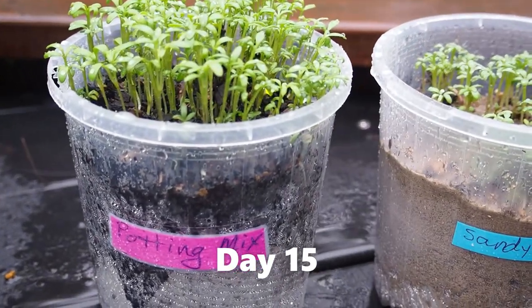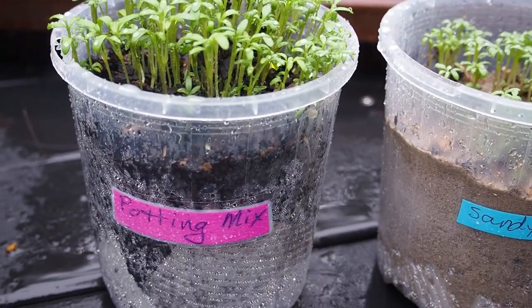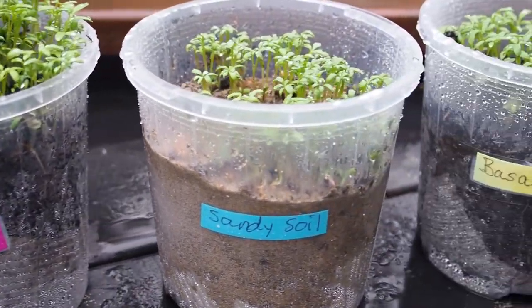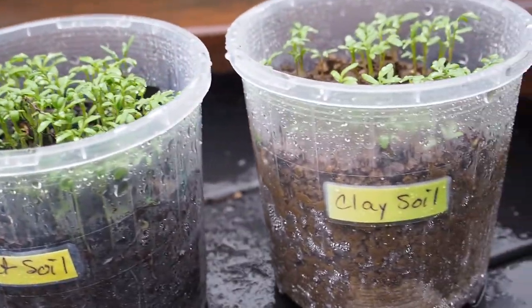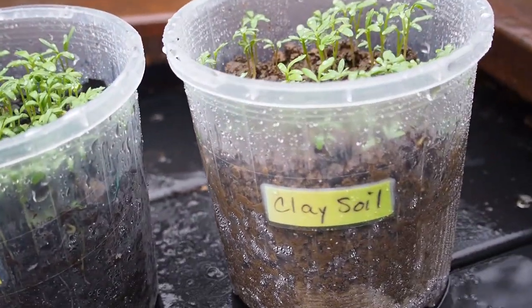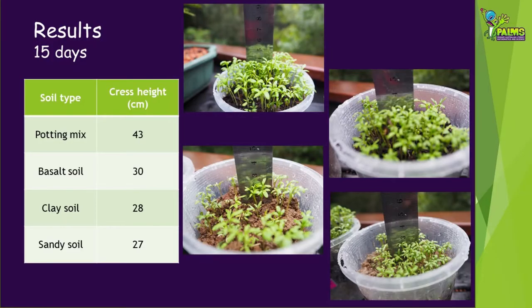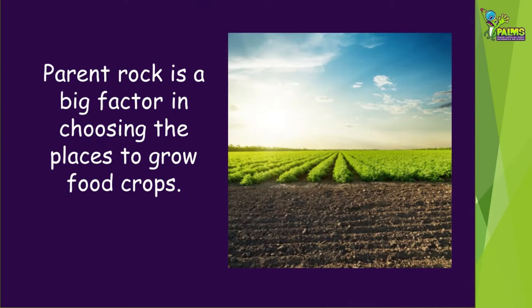In my experiment the potting soil had the greatest growth, as it contains mostly organic material. Natural soils have 10% or less of organic material. The basalt natural soil had a much better growth than clay or sand. Parent rock is an important factor when choosing places to grow food crops.